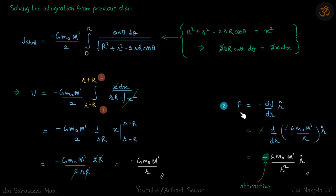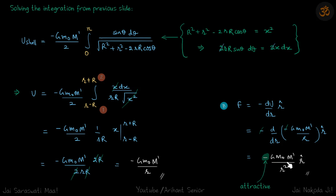For part B, we need to find the interaction force between the mass and the uniform sphere. We know force equals minus dU/dr times r-hat. Putting in the value of U and differentiating, the force comes out to be minus G M0 M' over R². The negative sign means the force is attractive in nature. This force is also independent of the radius of the shell, so when you add all the forces from all the shells, the eventual answer is minus G M0 M over R².